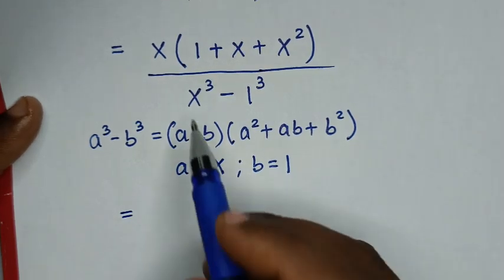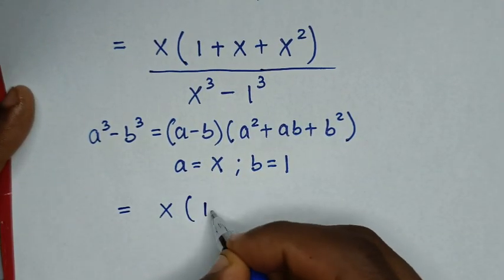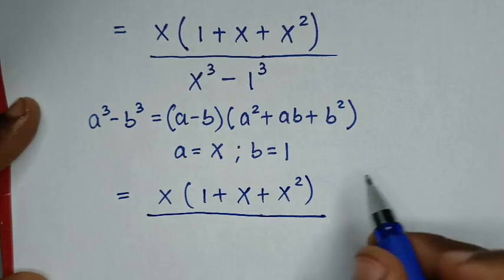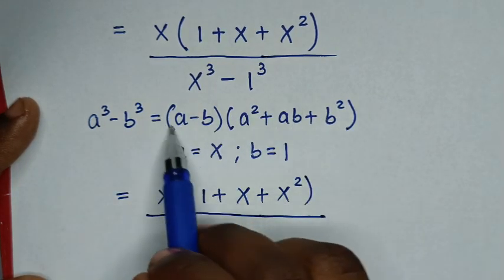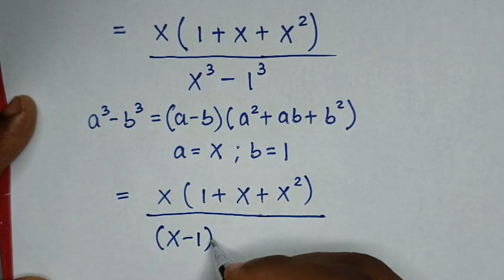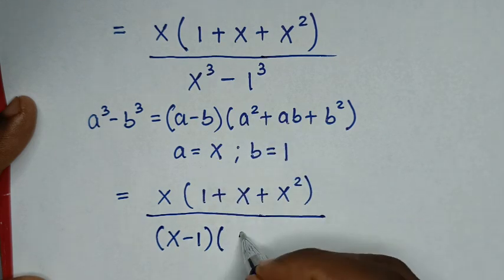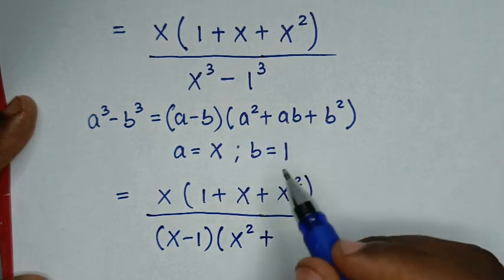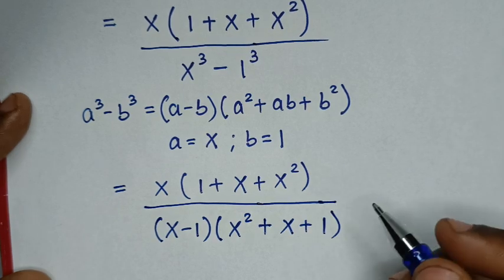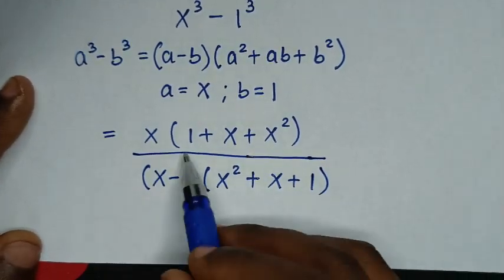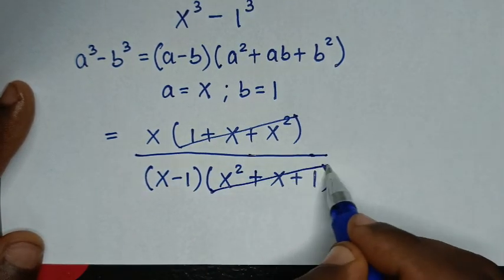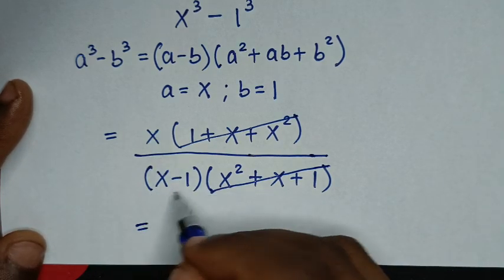Comparing, when a power 3 equals x power 3 then a equals x, and when b power 3 equals 1 power 3 then b equals 1. So the numerator is x bracket 1 plus x plus x squared, and the denominator becomes x minus 1, bracket x squared plus x times 1 plus 1 squared, which is x squared plus x plus 1. The factor 1 plus x plus x squared cancels, leaving x over x minus 1.